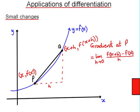We define the gradient at p as being the limit as h approaches zero of f of x plus h, take f of x, that's the difference between the two y values, all over h, which is the difference between the two x values.